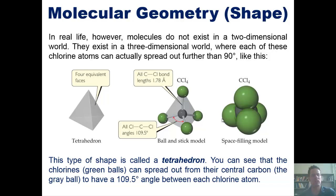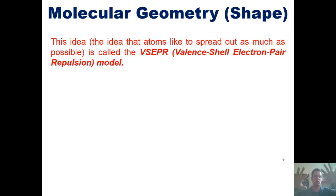So this would be the overall shape that we would see in carbon tetrachloride. Now this type of shape is called a tetrahedron. You can see that the chlorines which are the green balls in this picture can spread out from their central carbon atom to have about a 109.5 degree angle between each chlorine atom. So this idea, the idea that atoms spread out as far apart from each other as possible, is called the VSEPR or valence shell electron pair repulsion model. Sometimes I just like to call it VESPER because it rolls off the tongue a little bit easier.